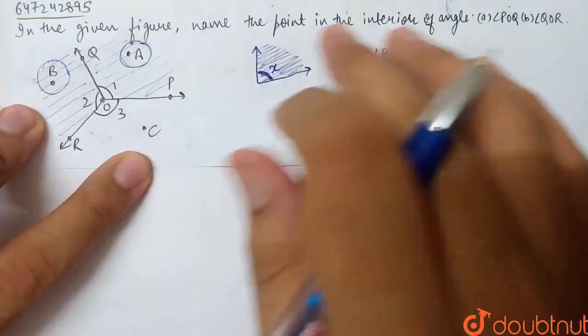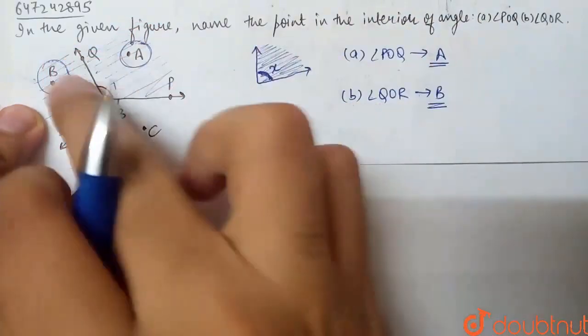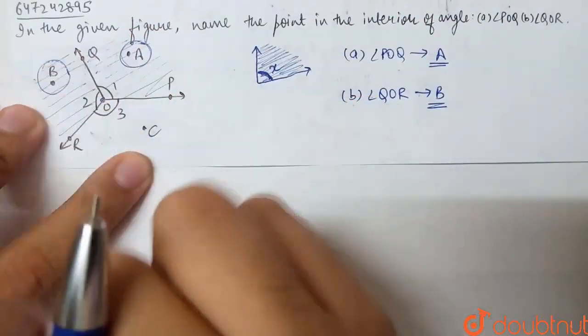Therefore, in this figure, the point in the interior of angle POQ is A, and QOR is B.